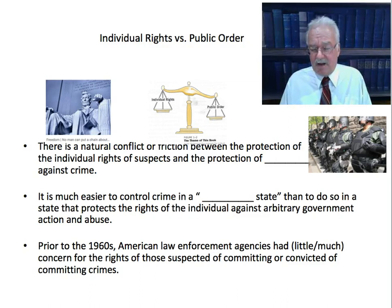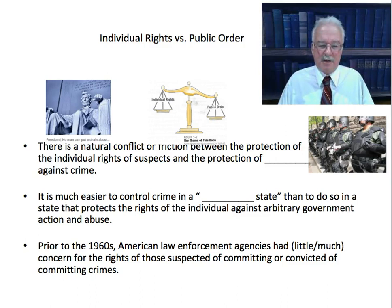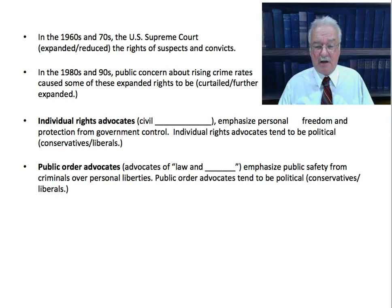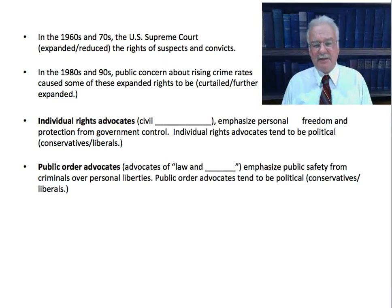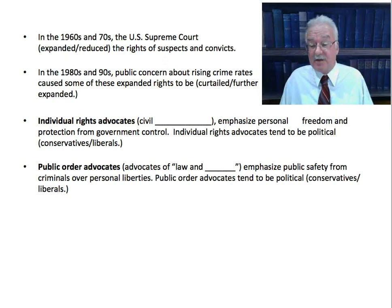Prior to the 1960s, there were routine unlawful searches and the use of force in interrogations — the individual rights of criminal suspects were routinely violated. But the 60s and 70s brought renewed thinking about individual rights, civil liberties, and civil rights. As a result, the United States Supreme Court under Chief Justice Earl Warren — known as the Warren Court — expanded the rights of suspects and convicts, instituting many protections for people suspected or even convicted of crimes.